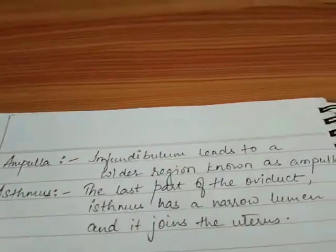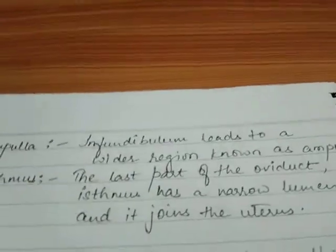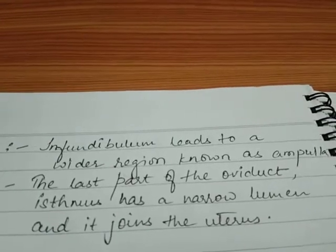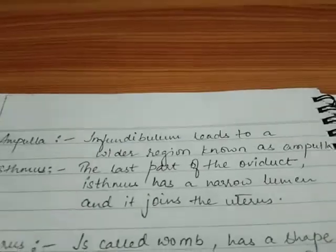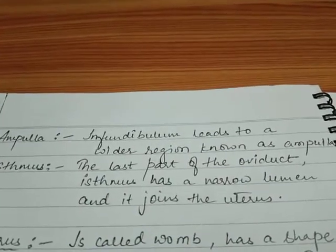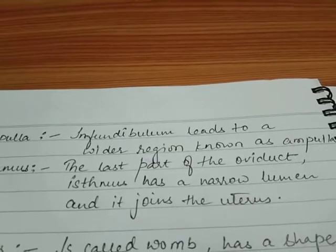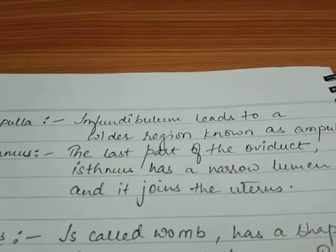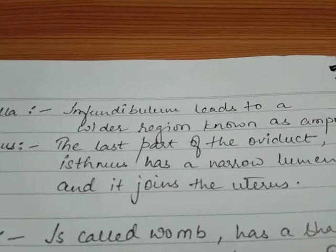Next, we have the ampulla. The infundibulum leads to a comparatively wider region known as ampulla. The ampulla later opens into the last part of the oviduct, which is known as the isthmus. The isthmus has a narrow lumen and is the region that joins with the fundus of the uterus.